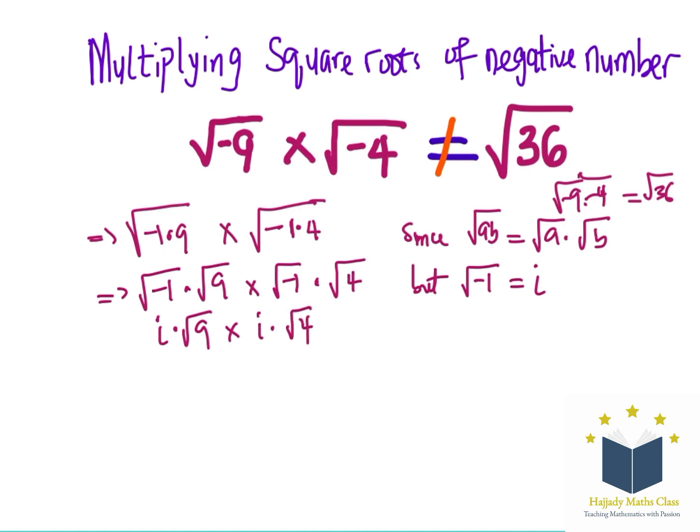Also, coming back to this, if the root of negative 1 equals to i, squaring both sides, this shows that negative 1 is going to be i squared.